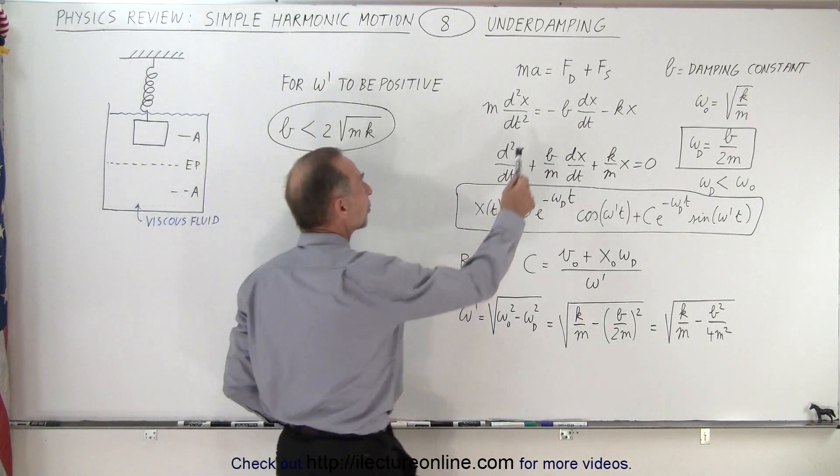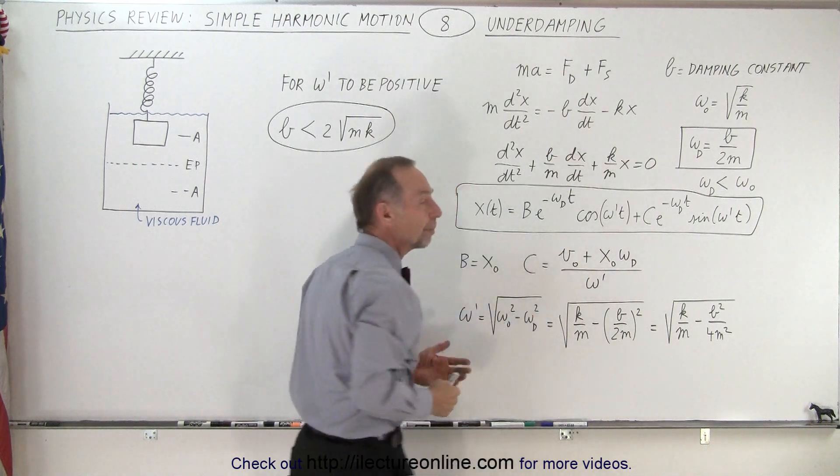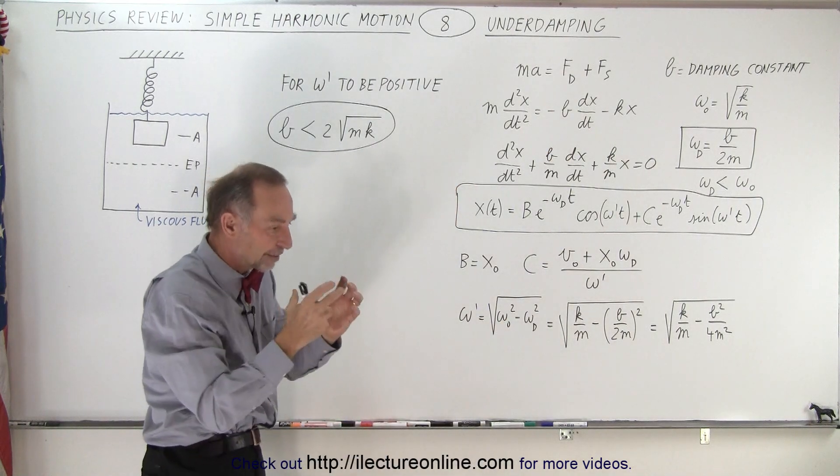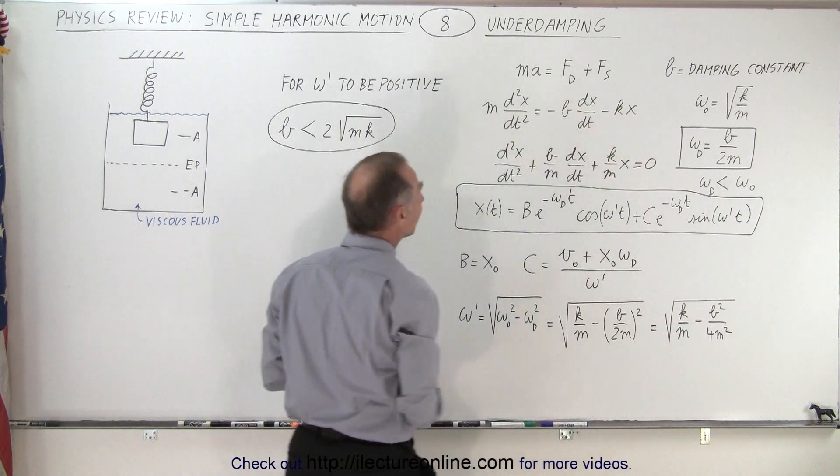Well notice we go back to our original F equals MA and we're going to set that equal to the sum of the forces caused by the viscous fluid and the forces caused by the spring. So this is the equation that you end up with.